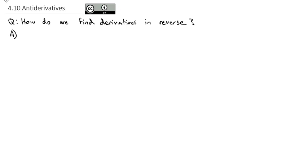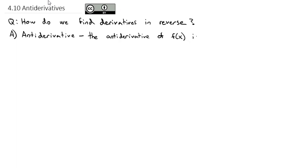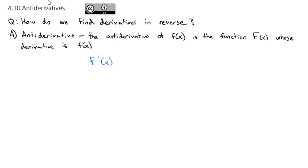That derivative in reverse is what we call the anti-derivative. We say that the anti-derivative of f of x (lowercase) is the function F of x (capital), whose derivative is the lowercase f of x. In other words, if the derivative of capital F of x is lowercase f of x, then capital F of x is the anti-derivative of f of x.